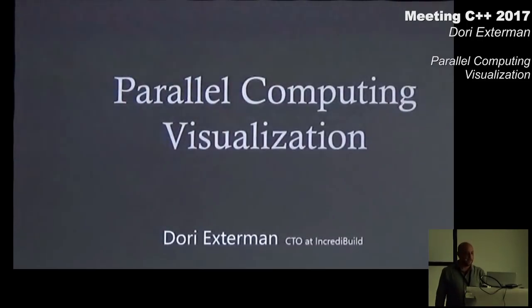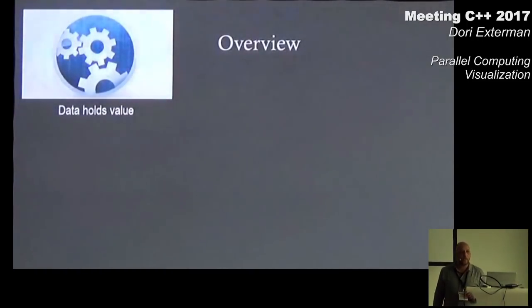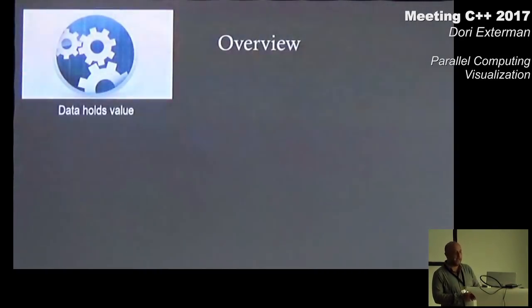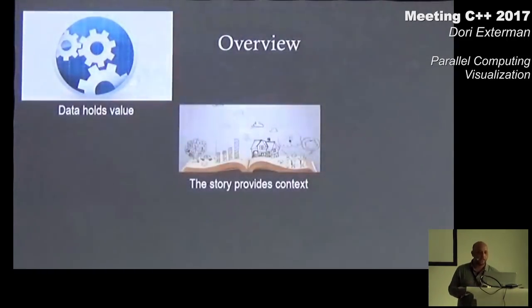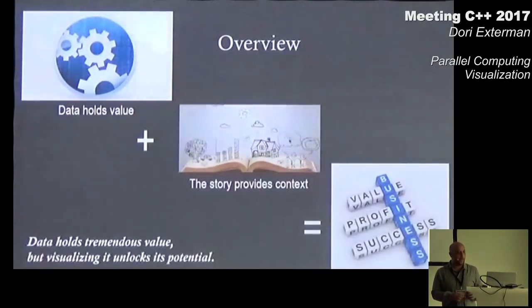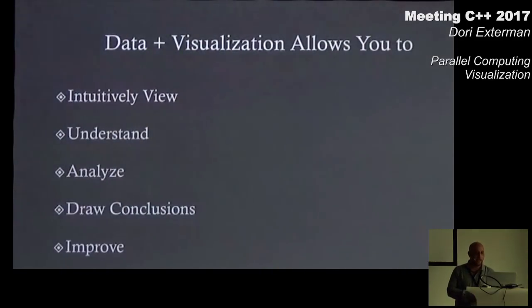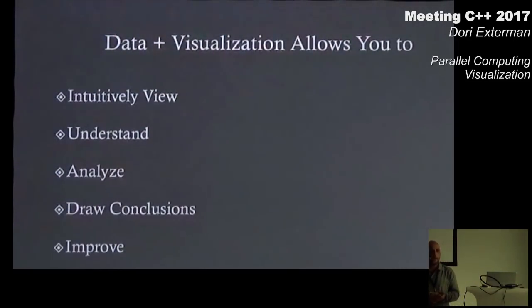We usually have a lot of data going on as part of things that we execute, especially in parallel computing. This data potentially holds a lot of value. The reason I say 'potentially' is because the story usually provides context for this data. When we combine the data we have with the context, we get value that we can use — value to better understand what it is that we are running.